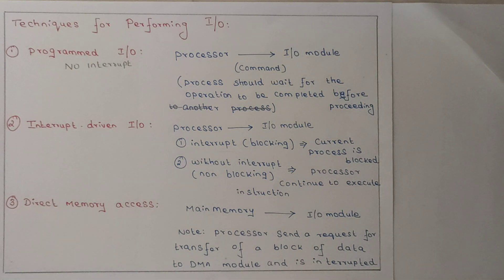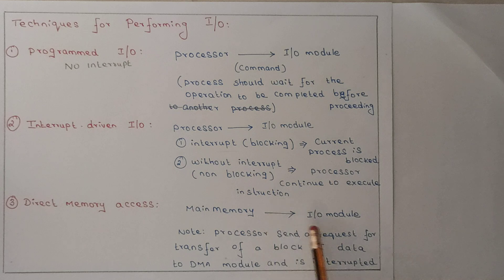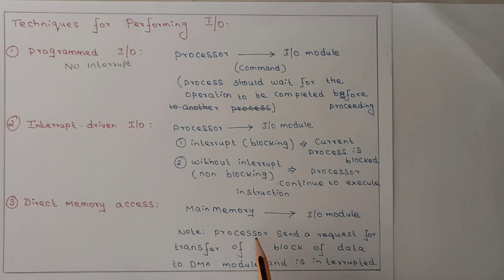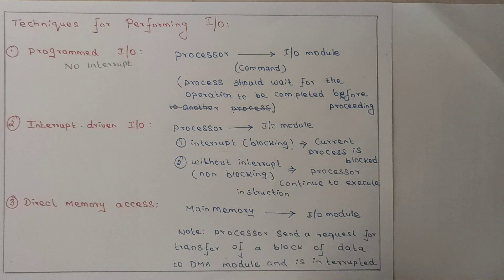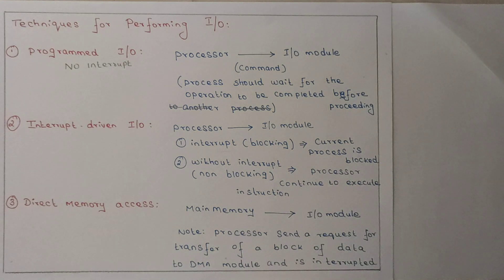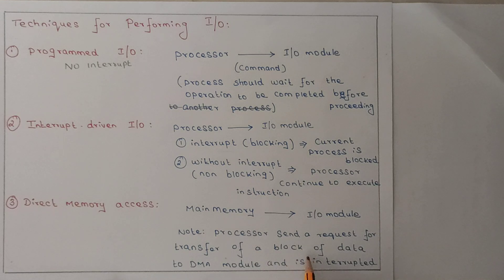But in direct memory access, the processor sends the request — here also the processor sends the request — but involving main memory and the input-output module directly. The processor acts as the entry and exit point only during the entry time and after the data has been transferred from the input-output module to main memory, or from main memory to the input-output module. After completion of the data transfer, an interrupt occurs, and then only the processor will come and know that the process has been completed. The process sender makes a request for the transfer of data.